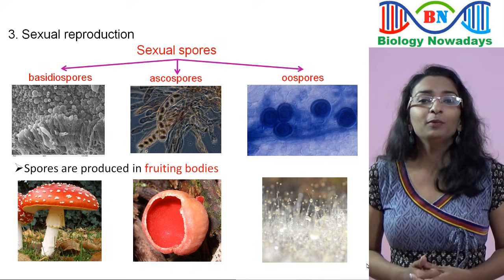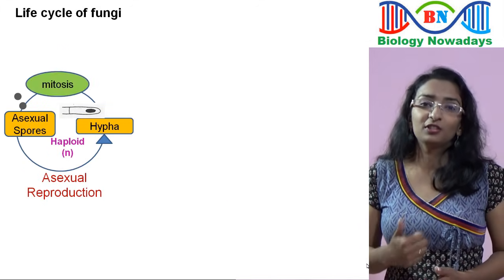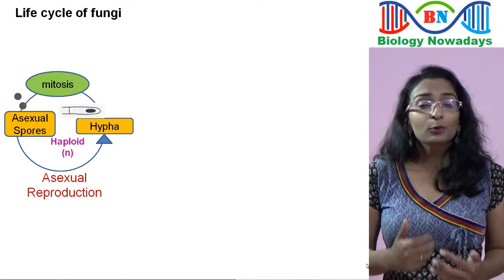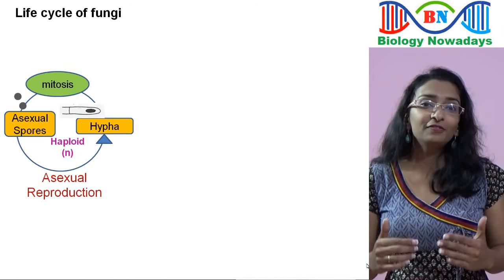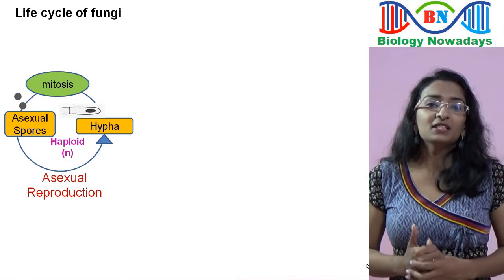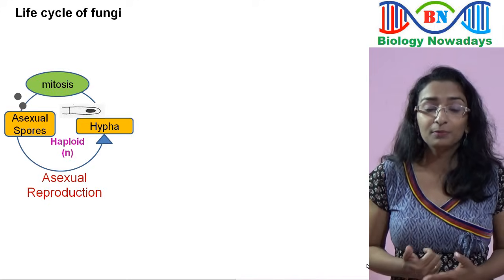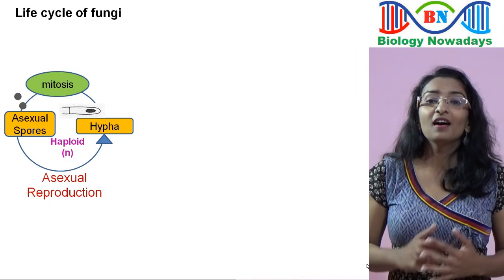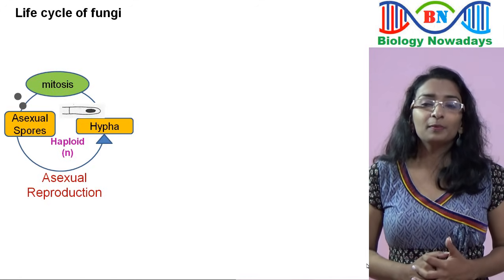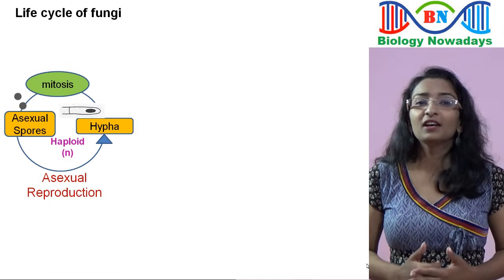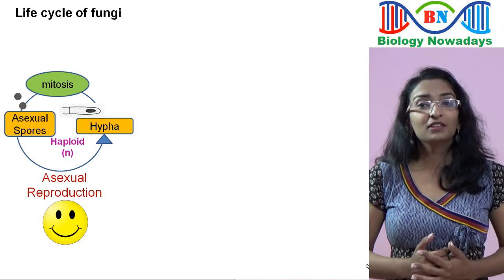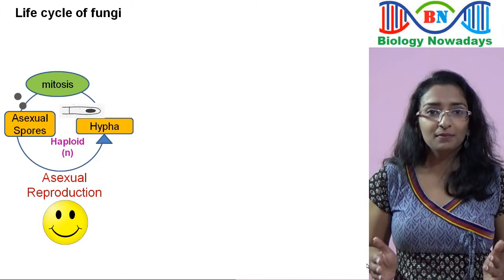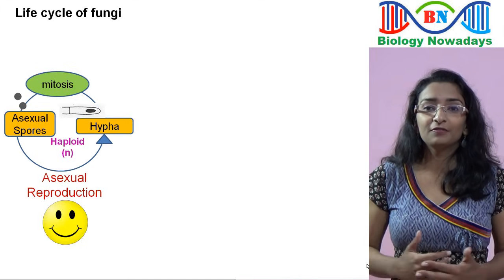Regarding the life cycle of fungi, a haploid hypha will form asexual spores through mitosis, and each spore on germination gives rise to a haploid hypha. Haploid means the nucleus contains only half the number of chromosomes, or one set of chromosomes, indicated as N. For example, in Penicillium notatum, the chromosome number is 4, so a haploid cell has only 2. Asexual reproduction occurs when conditions are favourable — warm, moist, and with lots of dead organic matter. The offspring produced through asexual reproduction are genetically similar to the parent, and a lot of spores are produced for rapid spreading.